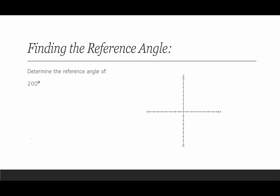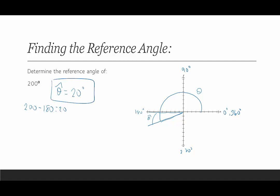Our last example: find the reference angle of 200 degrees. Labeling: 0°, 90°, 180°, 270°, 360°. 200 degrees terminates in quadrant 3, right about here. Theta hat will be along the negative x-axis and that terminal side. So we do 200 minus 180, giving us 20. The reference angle of 200 degrees is 20 degrees. This has been a few examples of finding the reference angle — thank you for stopping by.